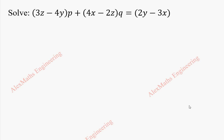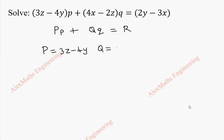Hi students, this is Alex here. In this video we are going to solve the given partial differential equation. This is of the form capital P into small p plus capital Q into small q equal to capital R. So capital P is 3z minus 4y, capital Q is 4x minus 2z, and capital R is 2y minus 3x.